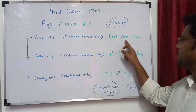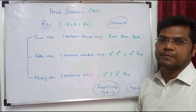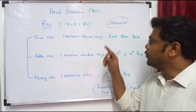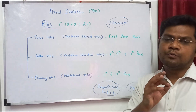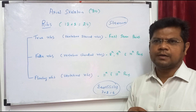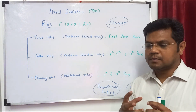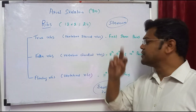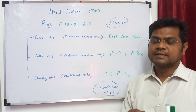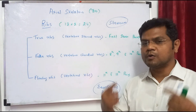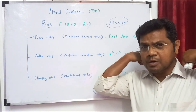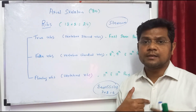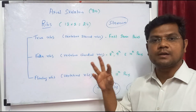The first 7 pairs are called true ribs, also known as vertebrosternal ribs. This was asked as a NEET exam question in 2019. True ribs are dorsally attached to the vertebral column and ventrally attached to the sternum — that is why they are called vertebrosternal ribs.